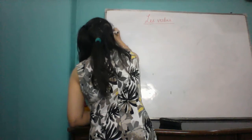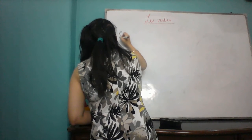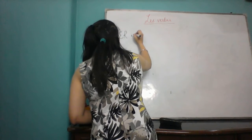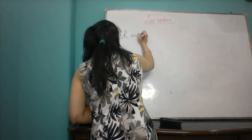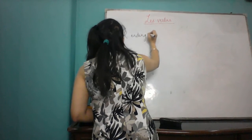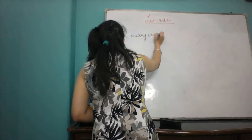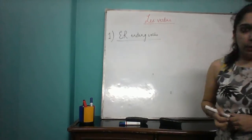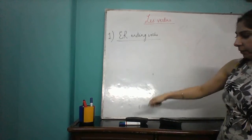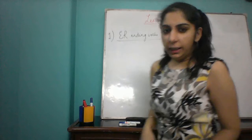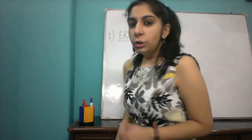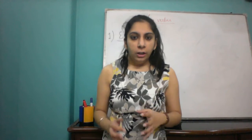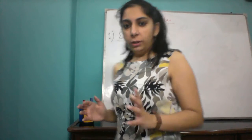The first ending that we have is ER ending verbs. ER ending verbs are the verbs that end with ER. If you remember, we have three categories of verbs, and the first one being ER ending verbs. So now we need to learn what a verb in French looks like first.